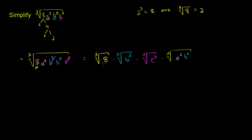Now, the cube root of 8 is 2. The cube root of b to the third is b. Let me do it in the same colors—makes it more visually compelling. The cube root of c to the third is c.